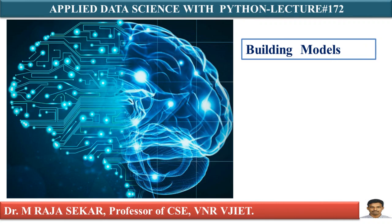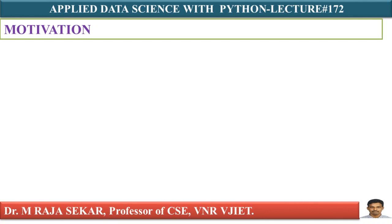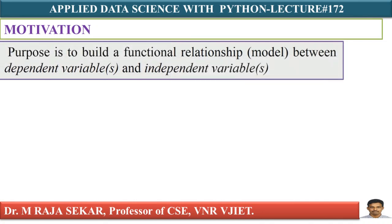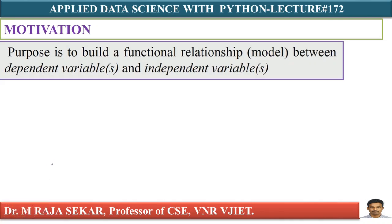We will start with some motivating examples. What is it that regression does? It is used to build a functional relationship — this point is very important — of what we call a model. That functional relationship itself is known as a model, between the dependent variable and the independent variable.